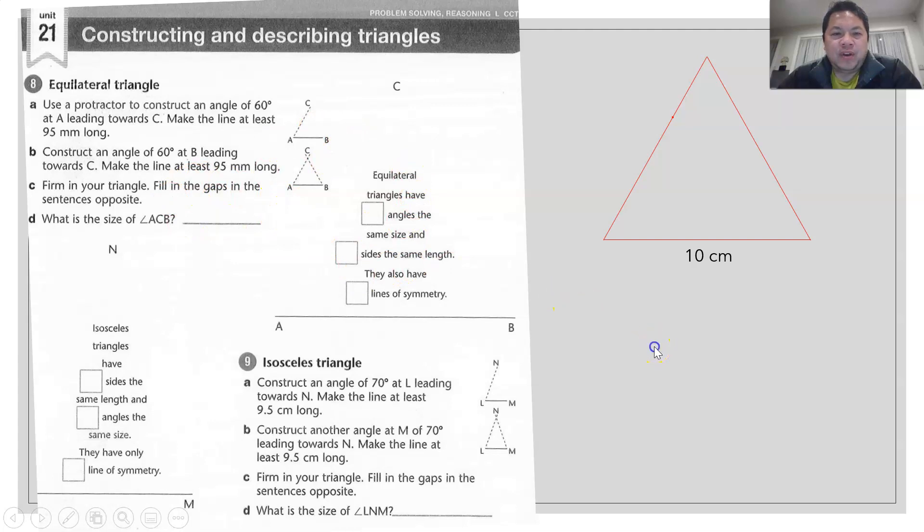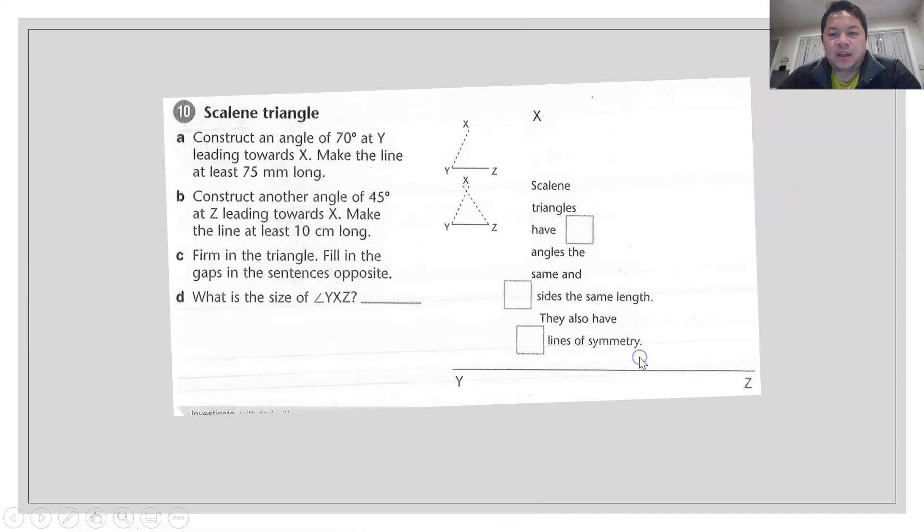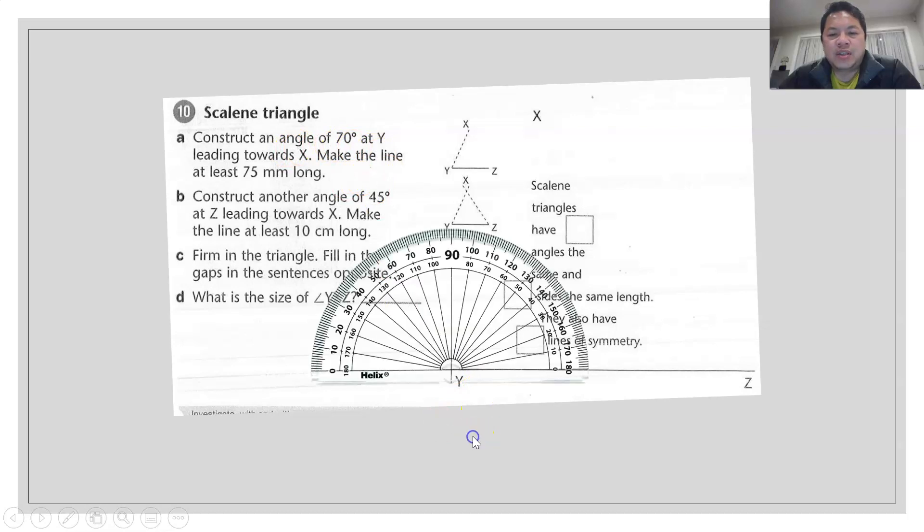Moving on to the next part. Of course the labeling is important. Moving on to the scalene triangle. Again, following the instruction, construct an angle 70 degrees at Y. So this is Y. I measure 70 degrees again, putting a protractor against it.